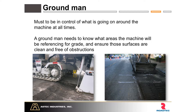The operator obviously has his hands full. The ground man is also in charge of some very key things such as maintaining zero, identifying obstructions, and communicating with everyone on the crew about what's about to come up and what's going to happen. There might be times when we need to switch our grade reference, switch sensors, or move to a different application — that's going to be his call, and he has a very big responsibility in that regard.